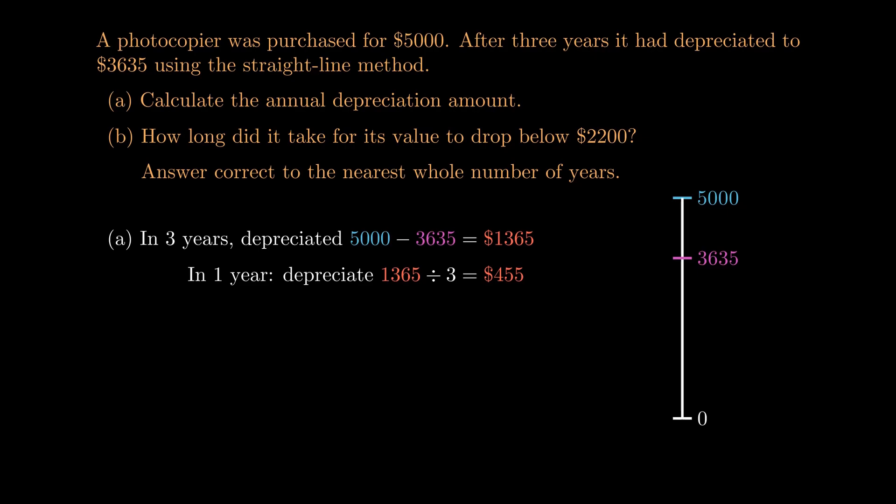So that's part A. For part B, we want the value to drop below $2,200, and we want to know how long it took to get there. So in a similar way, we need to drop by the difference between $5,000 and $2,200. That works out to be $2,800 to decrease. So how many years did that take? Well, each year it drops by $455. And we want to drop by $2,800 in total. So we need to divide to see how many $455s make up $2,800 in total. And we get 6.15 something something.